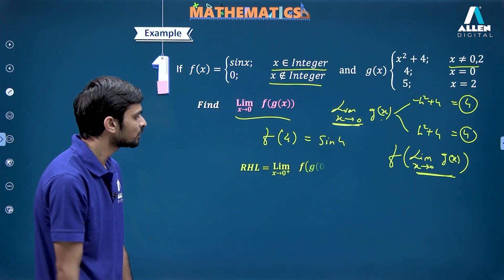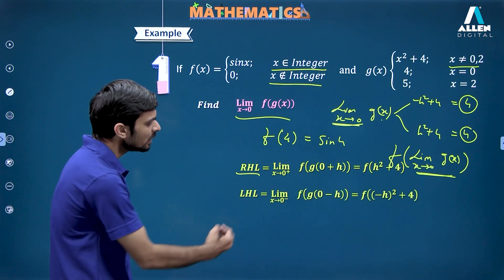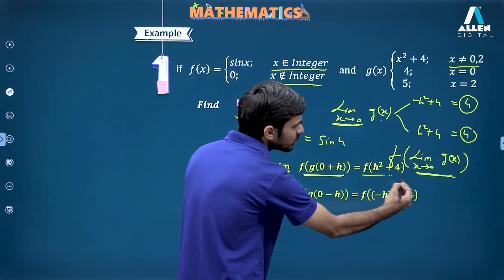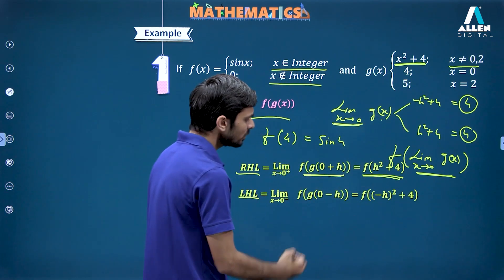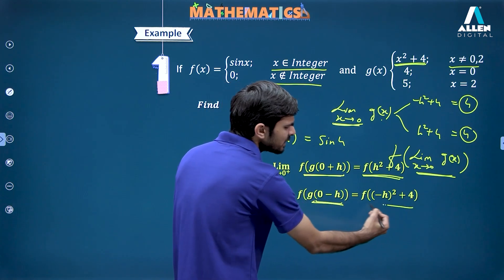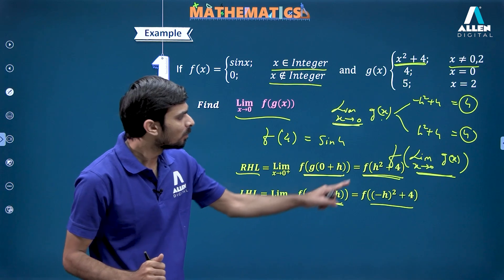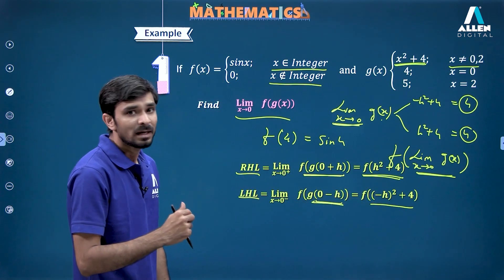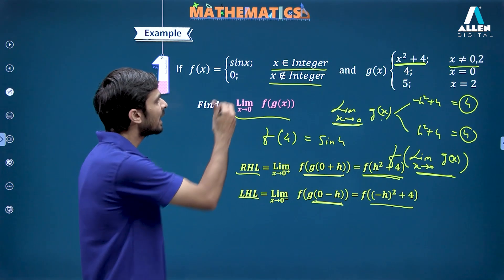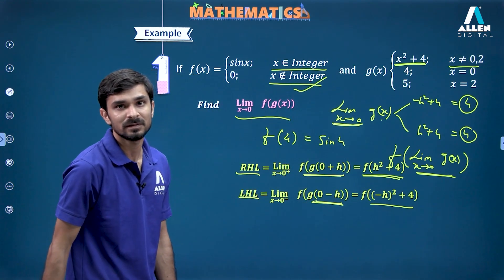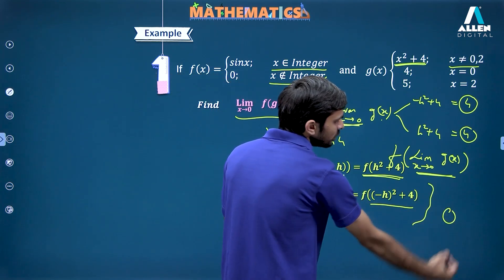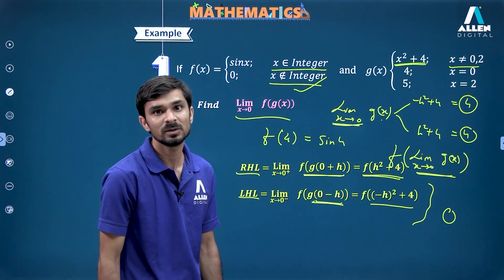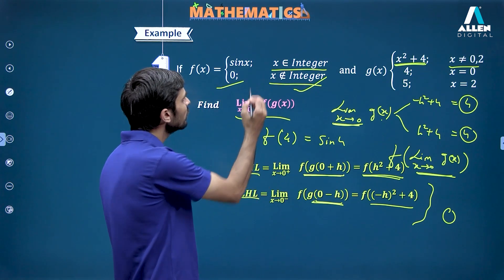What I actually need to do is evaluate the RHL and LHL of the whole composite function. For RHL: f(g(0 + h)) = f(h² + 4). For LHL: f(g(0 − h)) = f((−h)² + 4) = f(h² + 4). Both h² + 4 and h² + 4 are not integers, so I'll use the 'non-integer' arm of f(x), which gives 0. Both the right-hand limit and the left-hand limit approach 0, so the answer is 0.